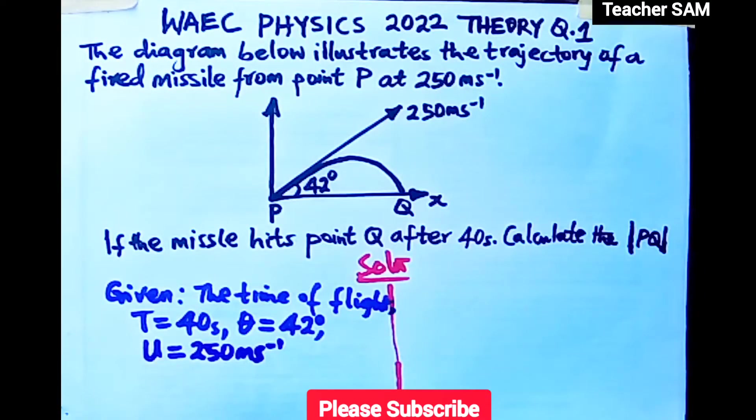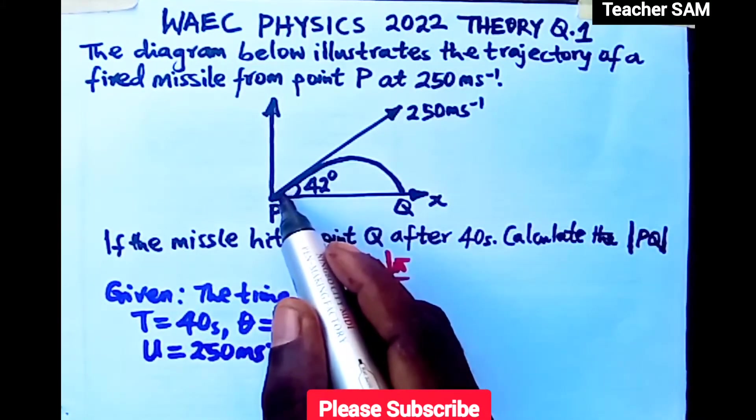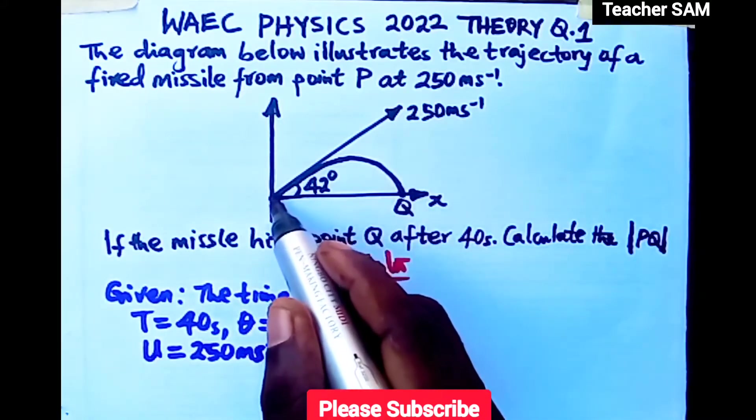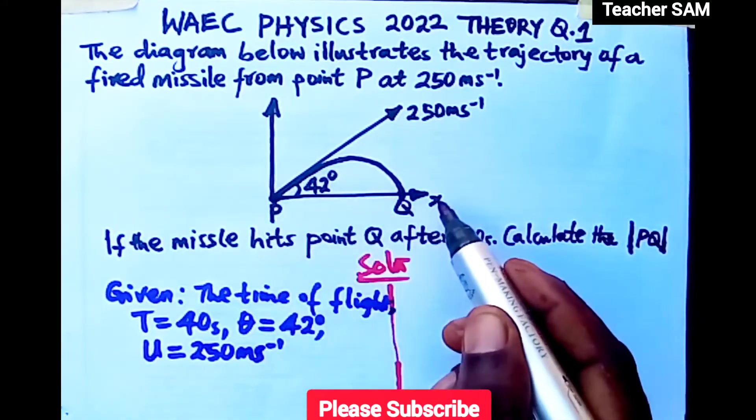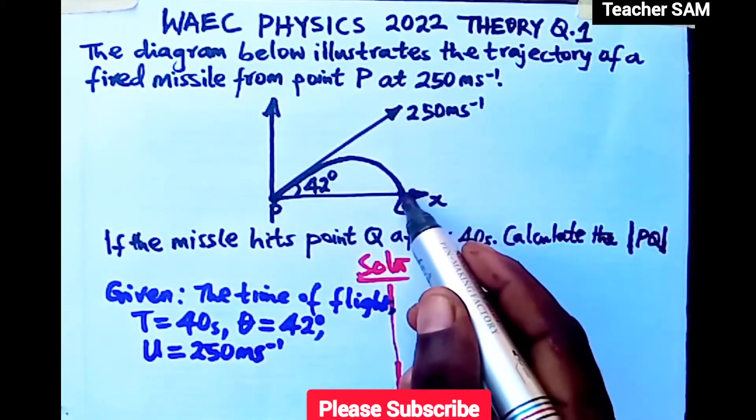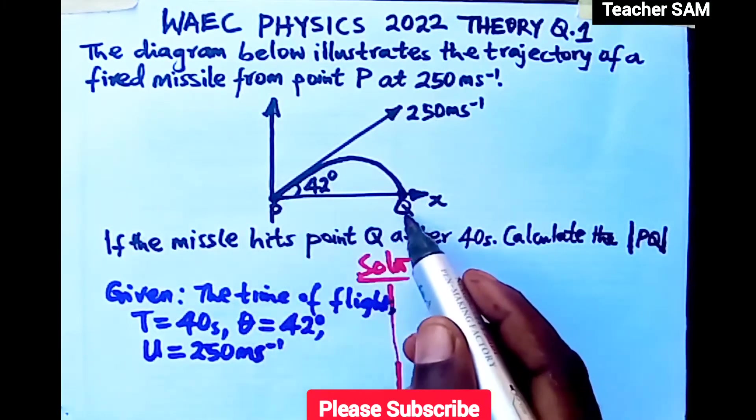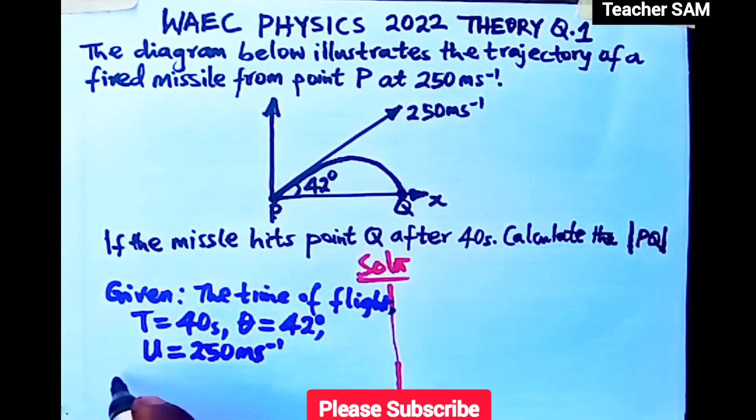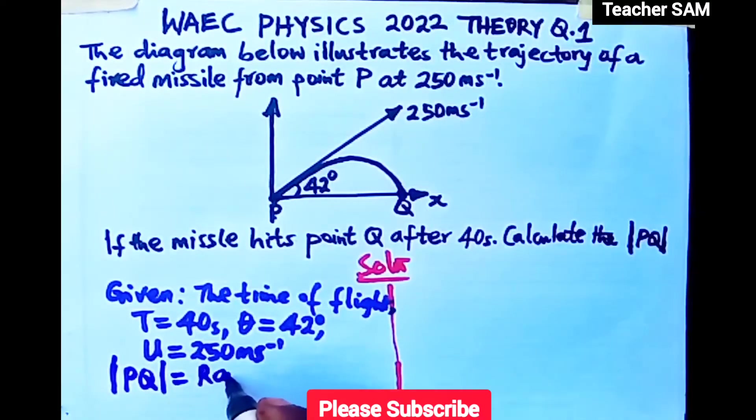Now, we are asked to calculate line PQ. That is, from the point where it's fired to where it drops. Fired at P and hits point Q. We are asked to calculate this range. So, line PQ equals the range R of this projectile motion.